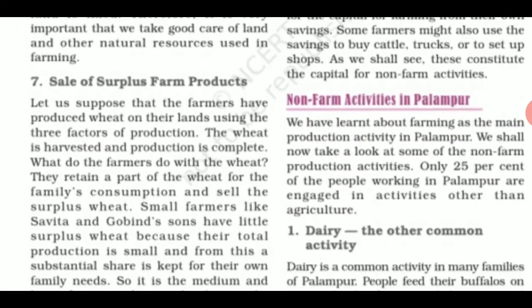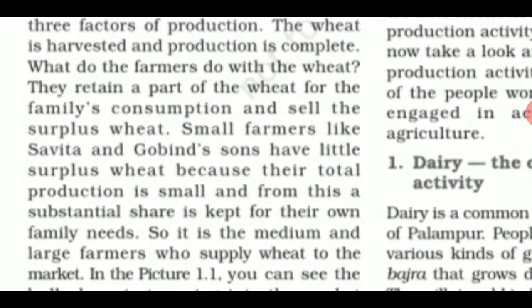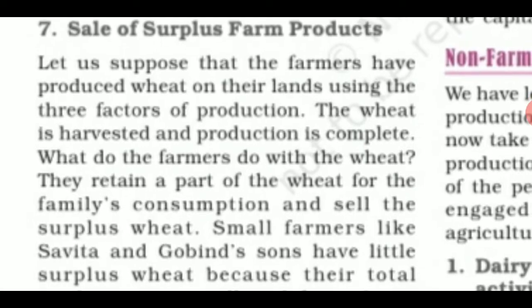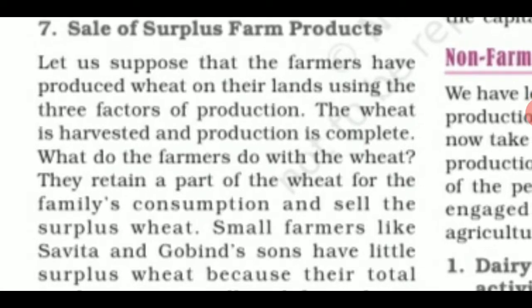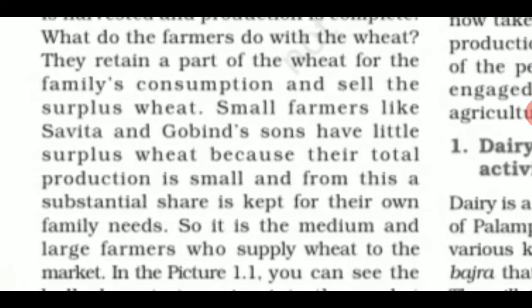Starting with the blanks given, the main point here is about the sale of surplus farm products. The sale of surplus farm products is divided into three categories. After the completion of the farming activity, how these farm products have to be sold out in the market — various types of food grains like wheat, rice, and pulses are available. These three categories are small, medium, and large farmers.